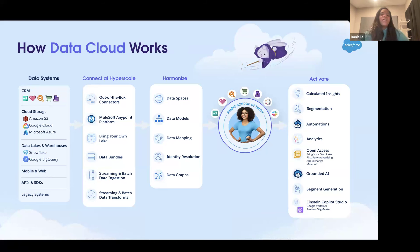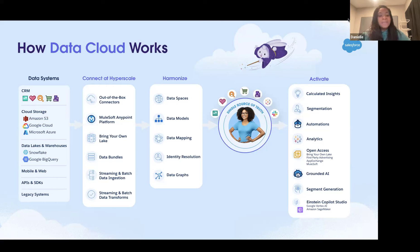All of that data comes in via either streaming — which can be near real-time — or batch, which is processed as soon as hourly. They are working on bumping batch processing up to as soon as five minutes. All this data comes into Data Cloud's data lake and gets harmonized into a canonical data model of data lake objects and data model objects.